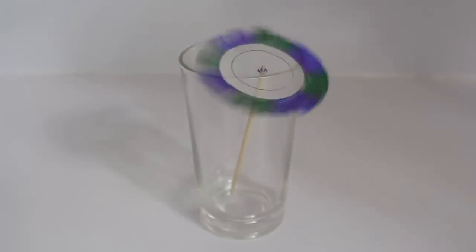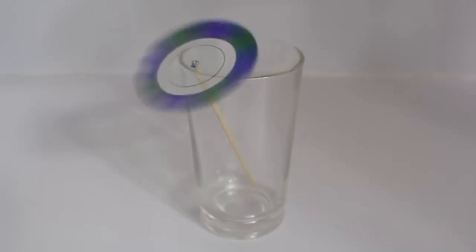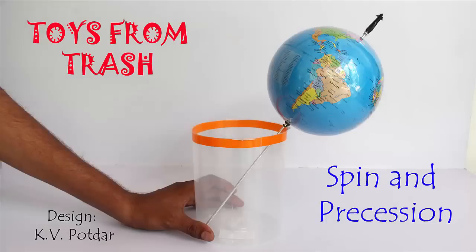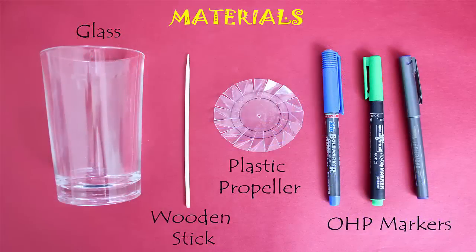You see a propeller on a stick kept in a glass. The propeller spins and also wobbles creating a large cone. To understand this precession you need a wooden stick, a plastic propeller and a glass.